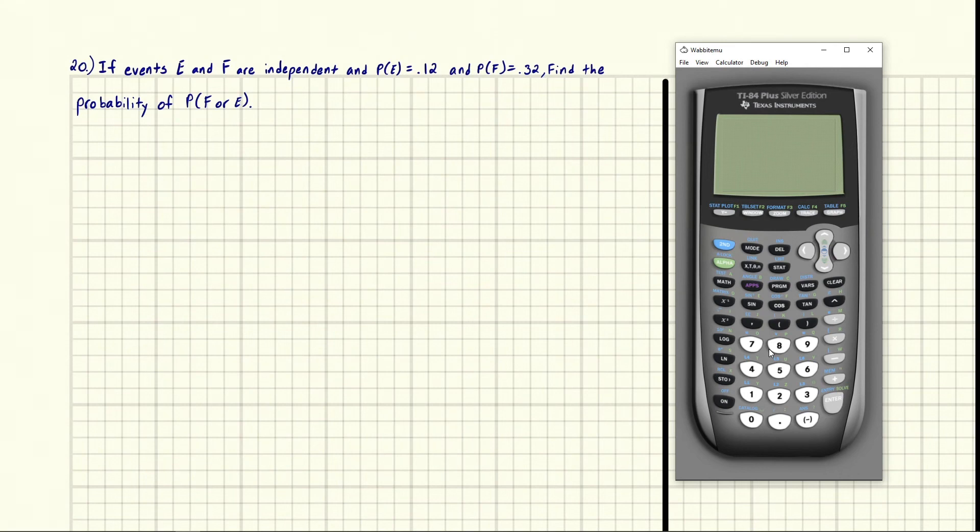Eric Burgess here. If events E and F are independent and P(E) = 0.12 and P(F) = 0.32, find the probability of F or E.